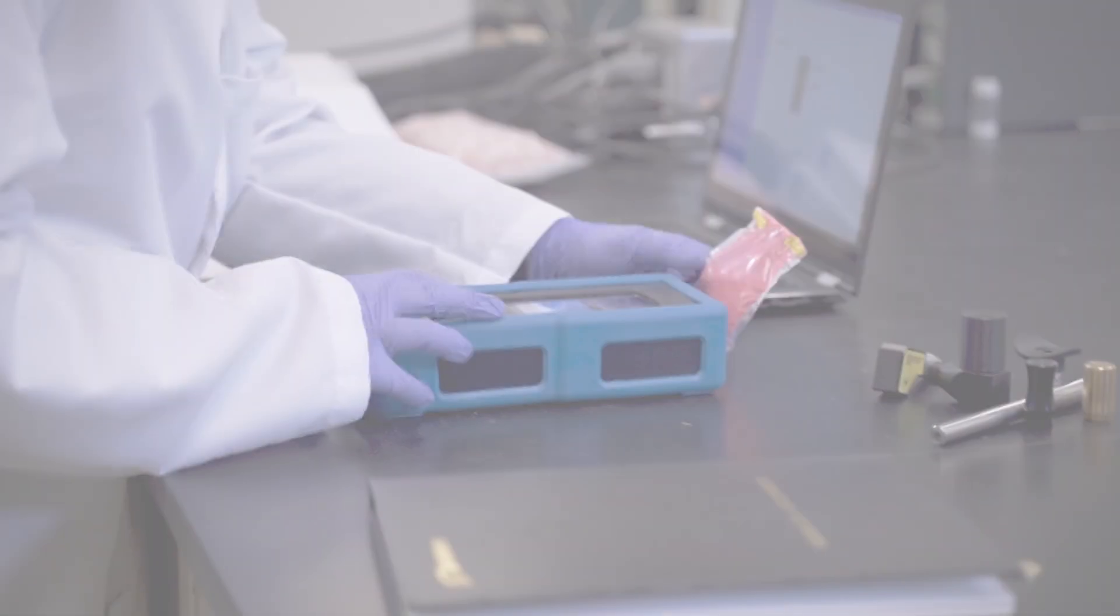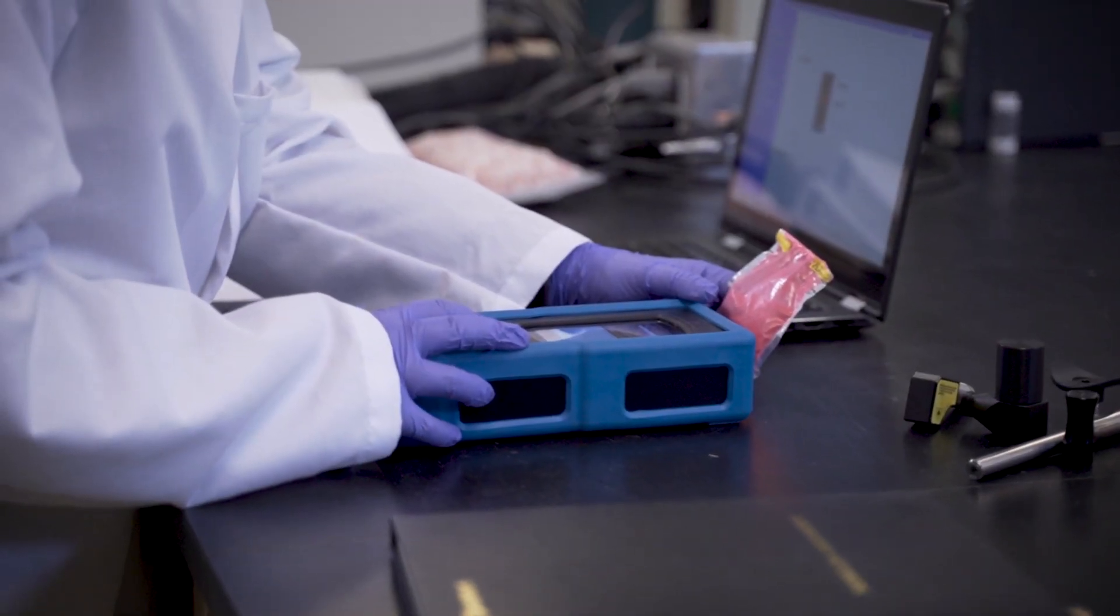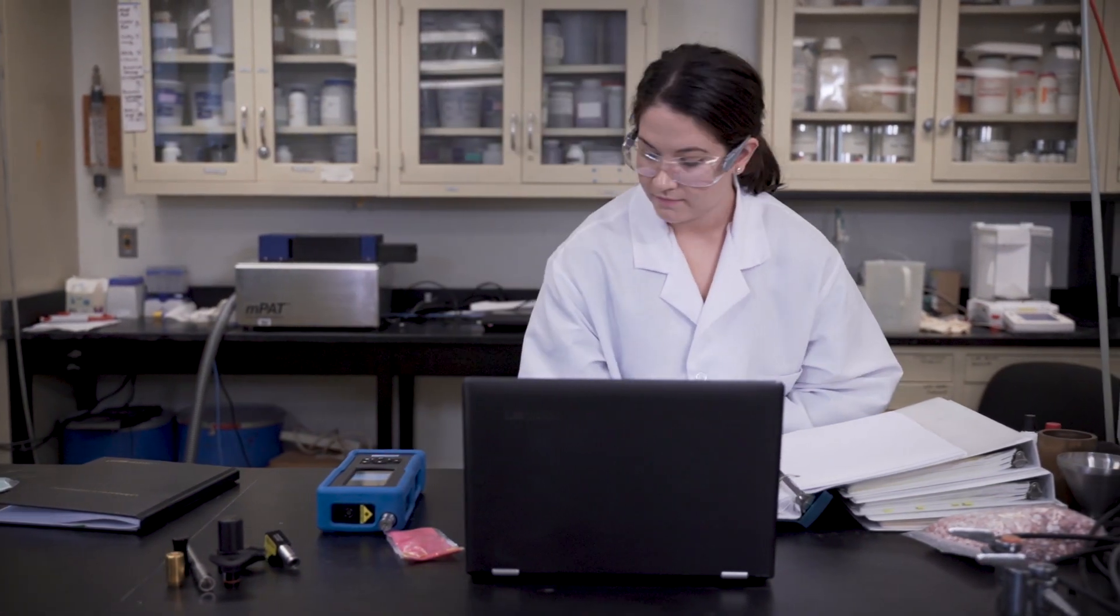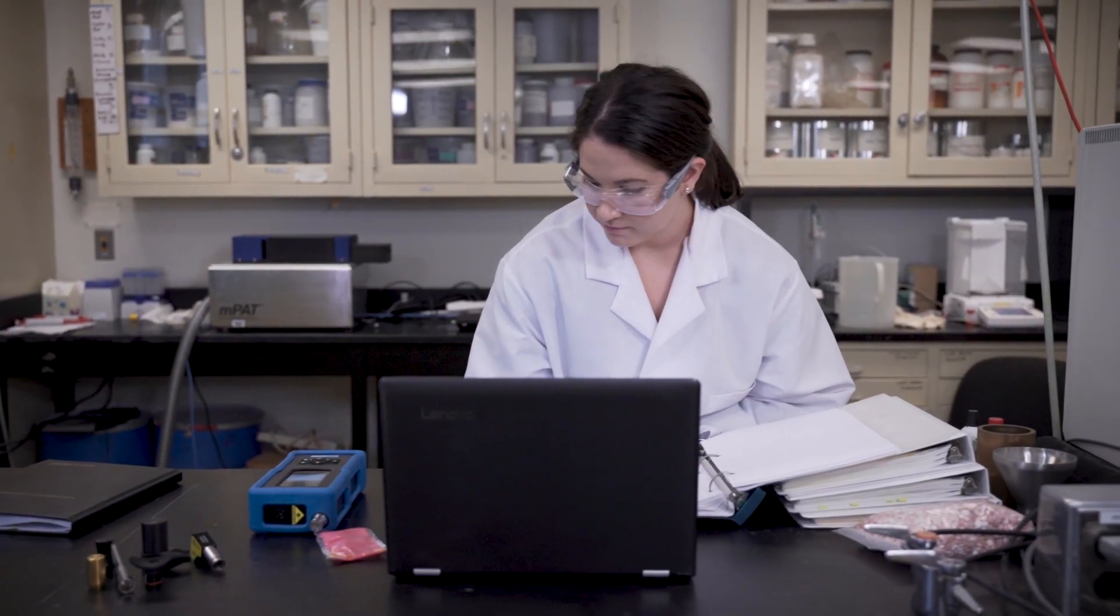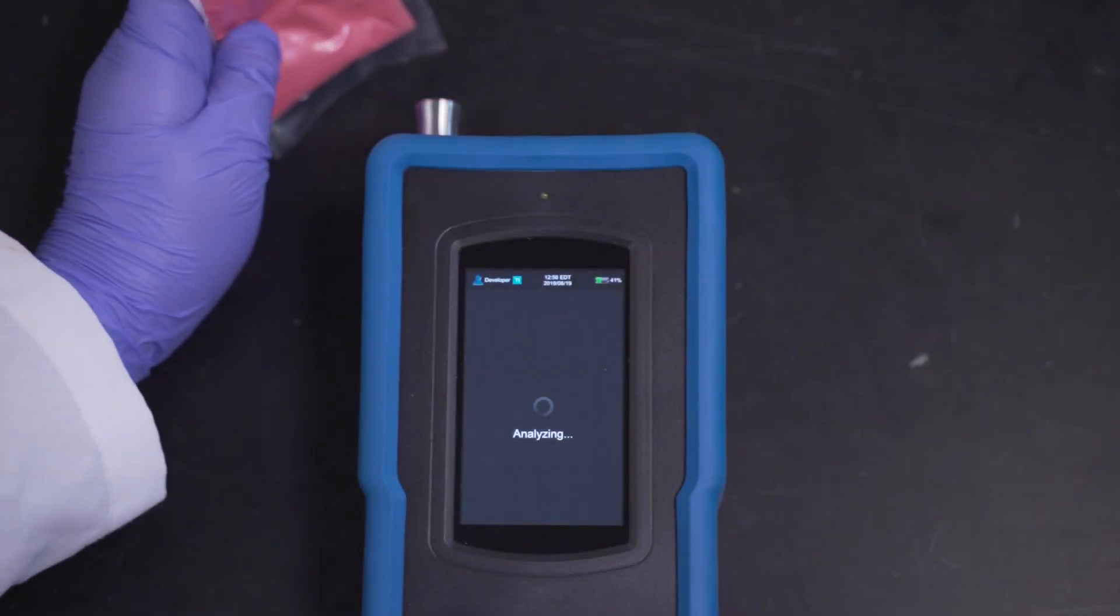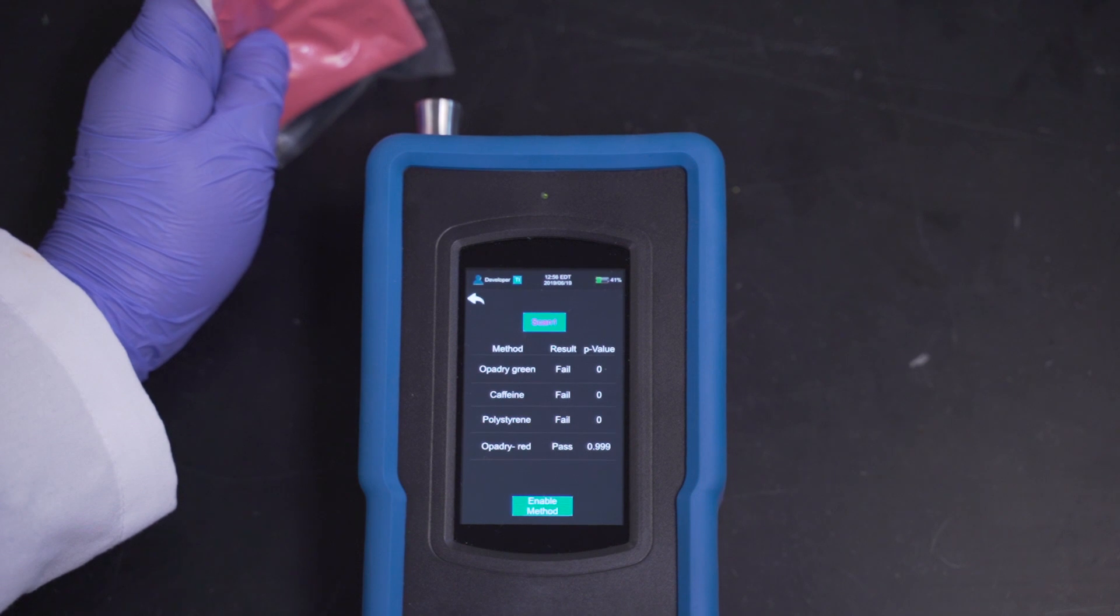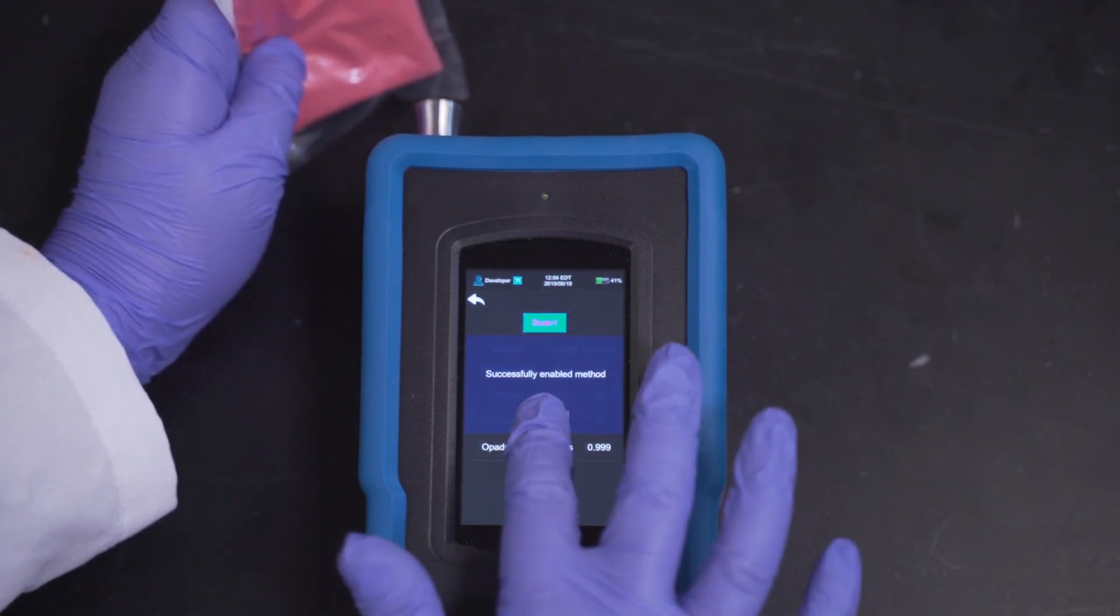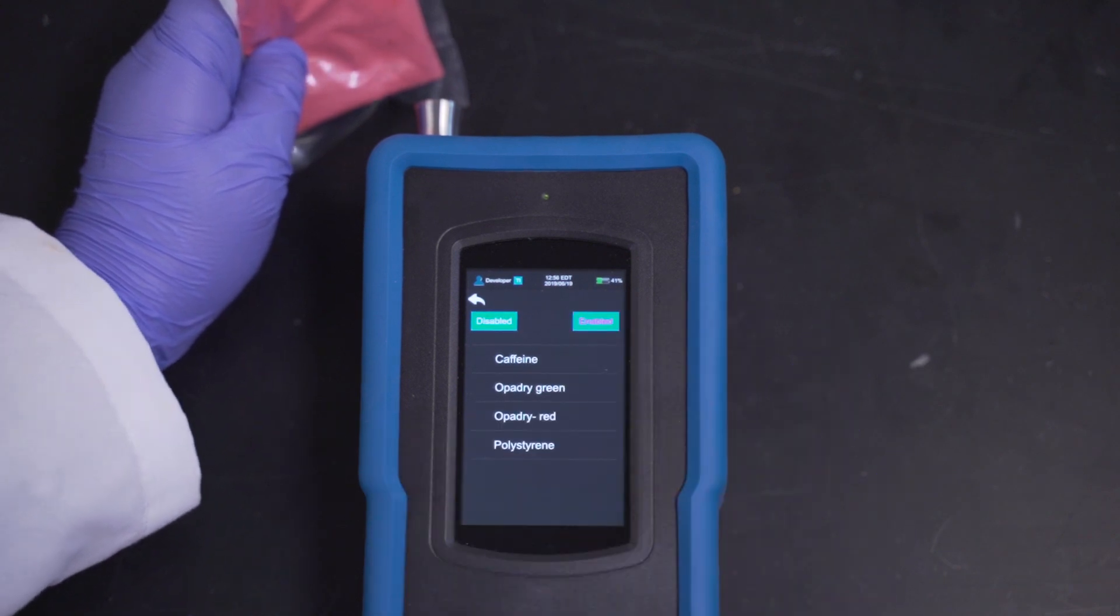The NanoRAM 1064 offers onboard method validation, greatly reducing the amount of time required by developers to release methods into the production environment. Developers can select unreleased methods and run method validation against all released methods on the instrument, automatically generating the necessary validation reports required for method release.